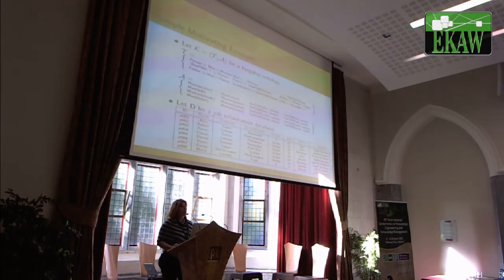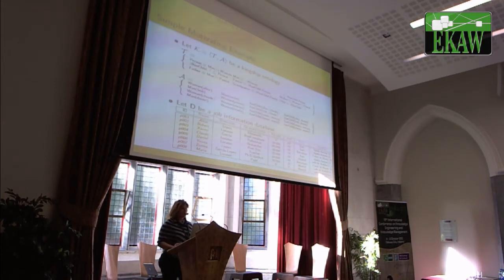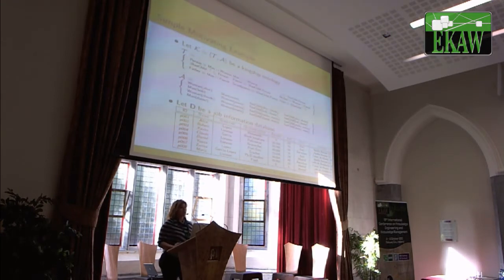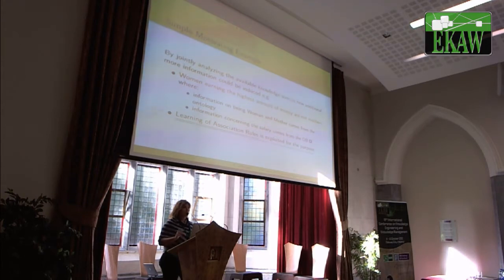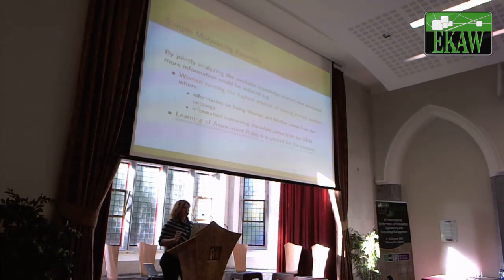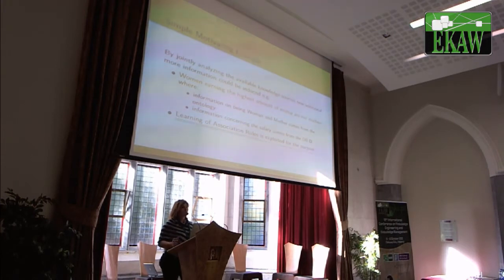Consider this simple but intuitive motivating example. Assume a knowledge base describing the kingship relationship is available, and this ontology also contains an assertional part. Then an organization has a database concerning job information that shares at least a subset of individuals from the ontology. If we put these two different sources together, we may discover something like: women that earn the highest amount of money are not mothers. The knowledge of being mothers and women comes from the ontology, and salary information comes from the database. This information cannot be discovered if the two sources are analyzed separately.